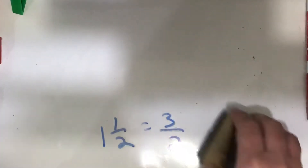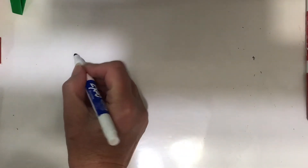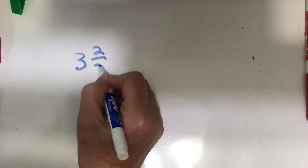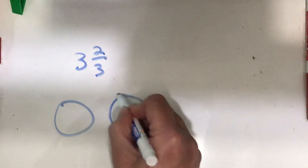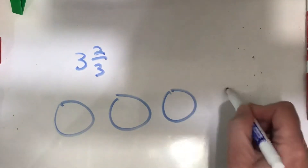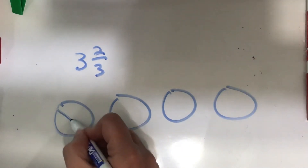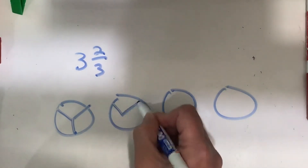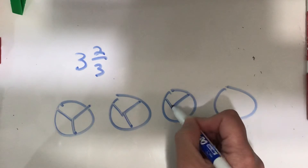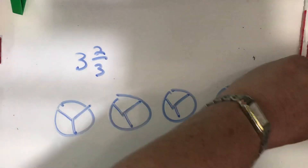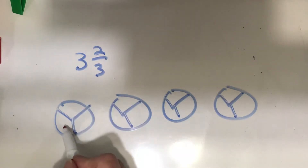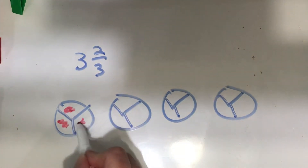We also drew pictures, which is what you did on your work yesterday in your workbook. So if you had three and two-thirds, you had to draw four pictures, because three and two-thirds is more than three. So you're going to divide each of them into thirds, and you know that each whole is three-thirds. So you had to shade in three of three-thirds on three of them, which would make nine-thirds, because three times three is nine.